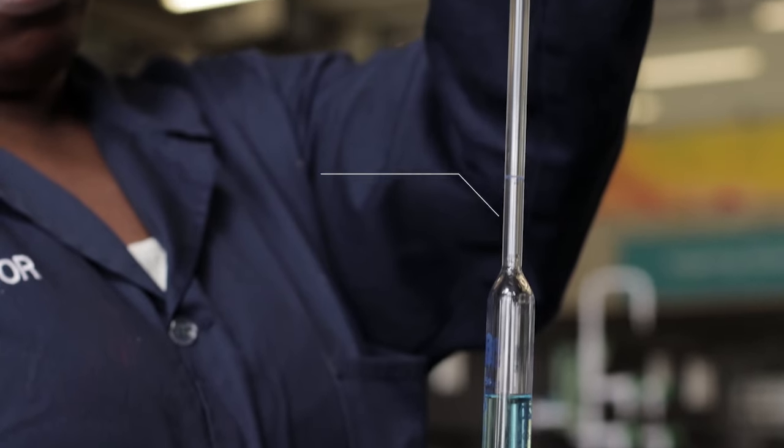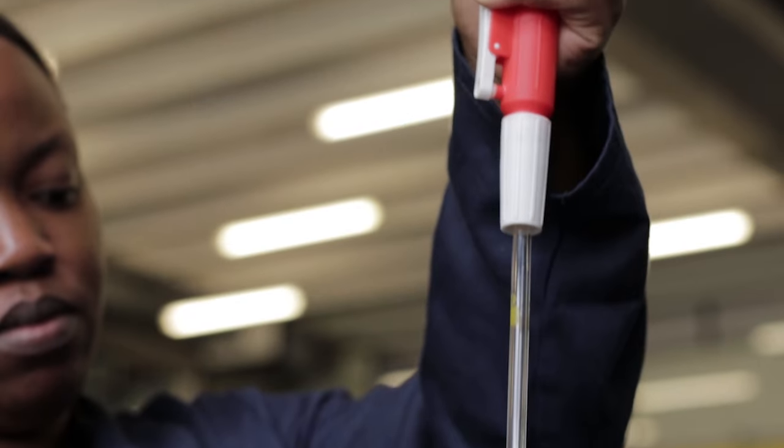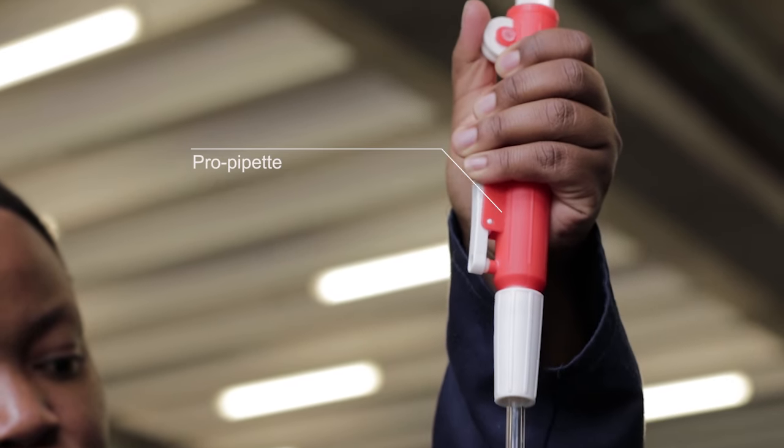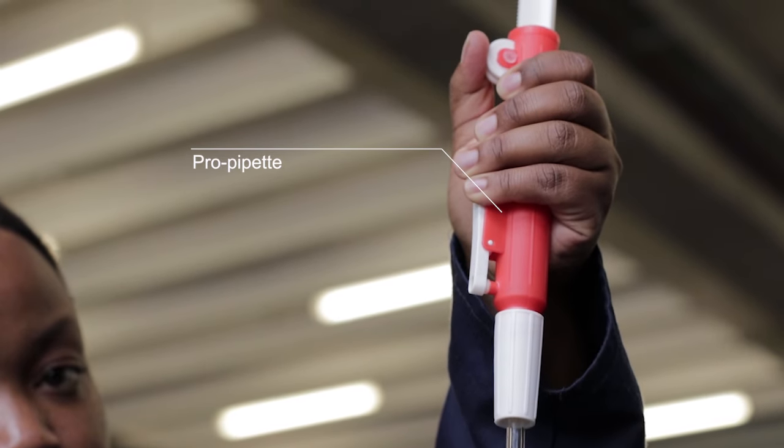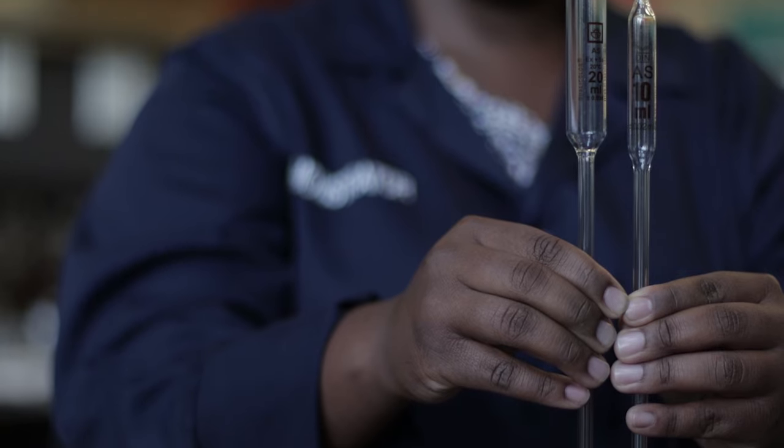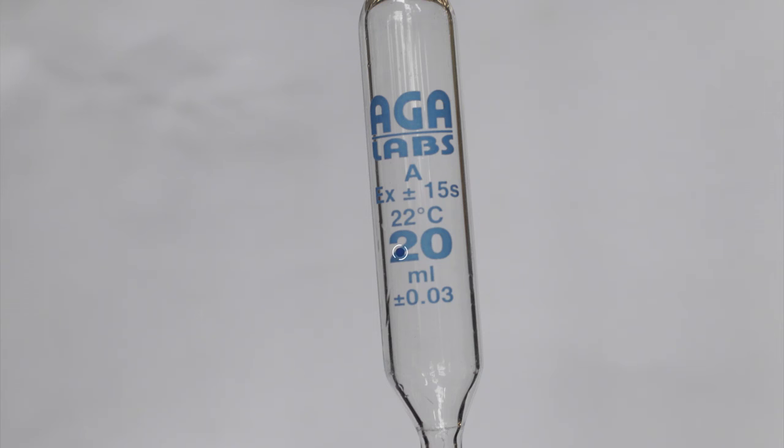A pipette is used to measure a volume of solution with extreme precision. This is done by using a pro pipette to suck up the solution. Pipettes are found in different sizes. This is the volume of the solution to be delivered which should be recorded as 20.00 millilitres.